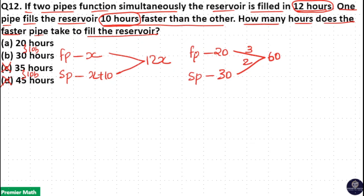If they work together, if both of these pipes work together, they will take 60 divided by the efficiency of the faster pipe and slower pipe, which is 3 plus 2, 5 units. So, 60 divided by 5, 12 hours. So, if they work together, they will take 12 hours to fill the tank.